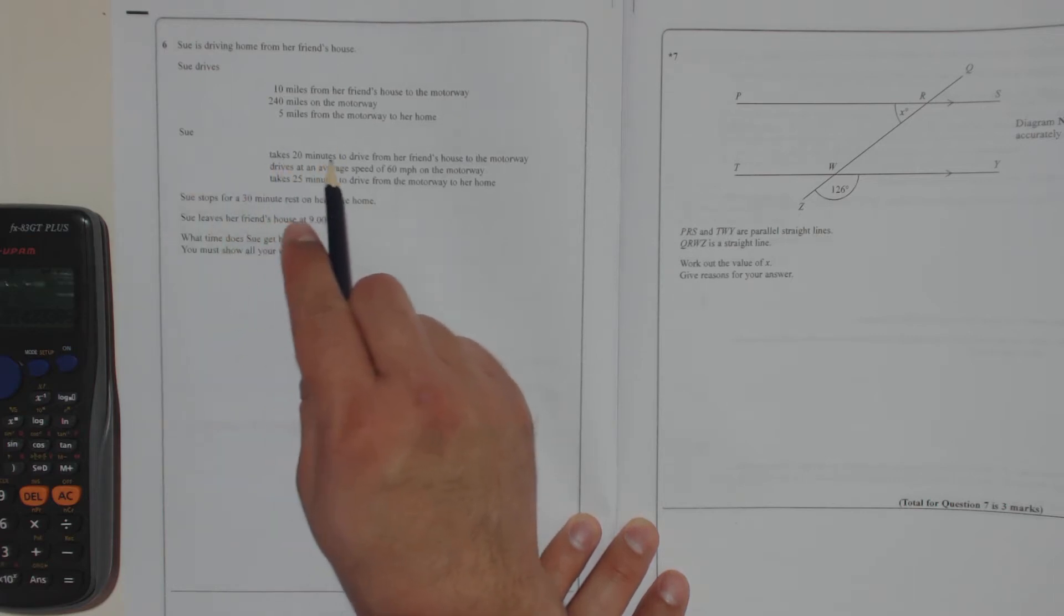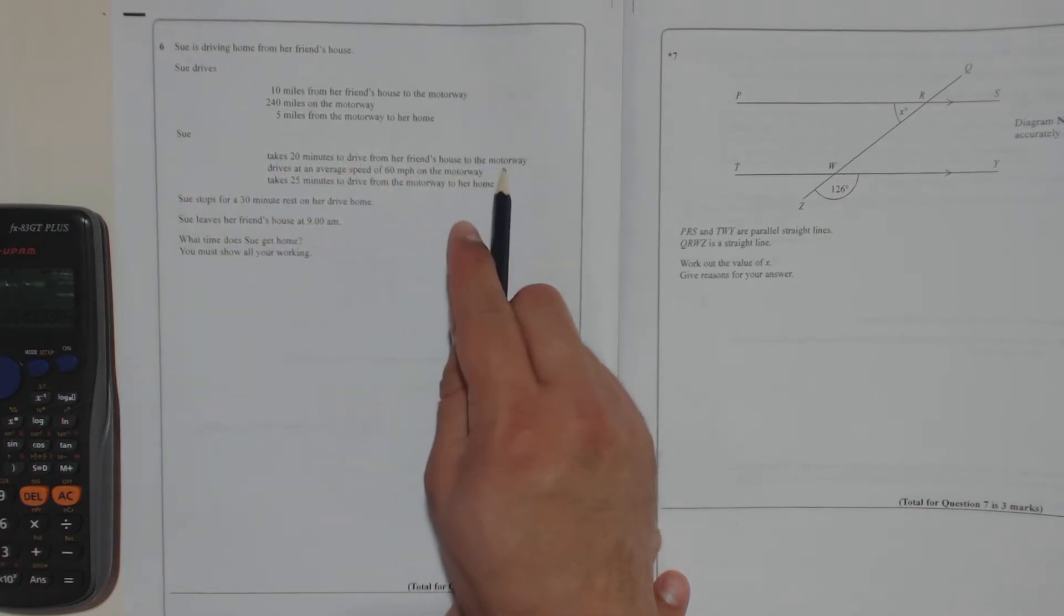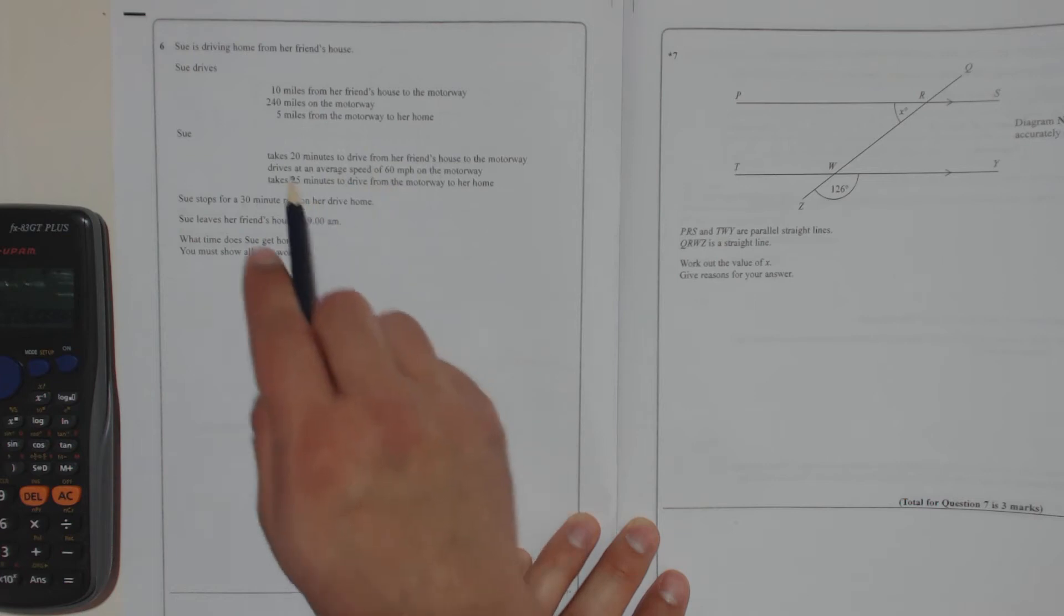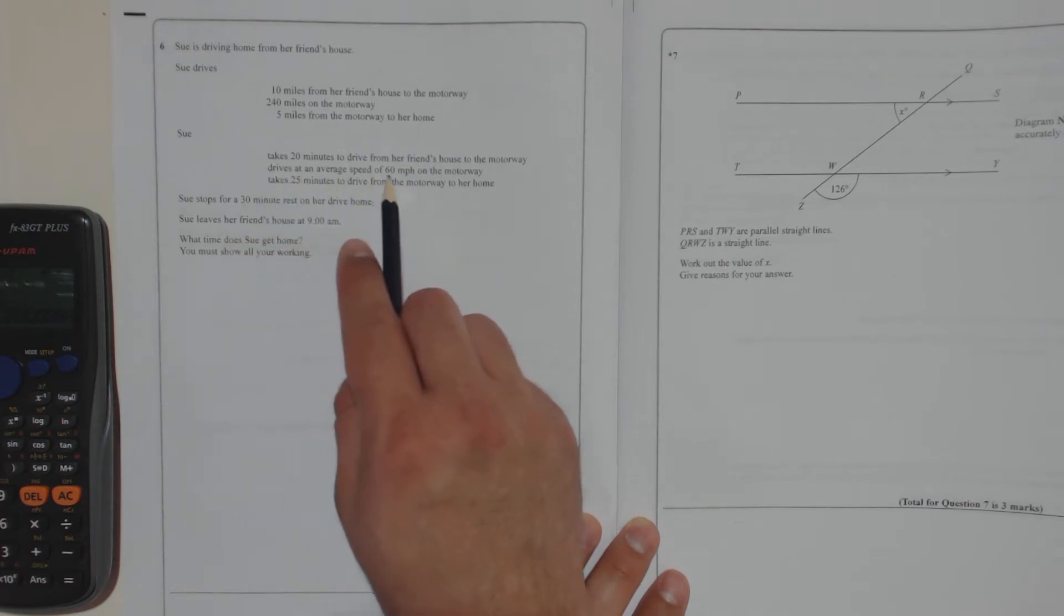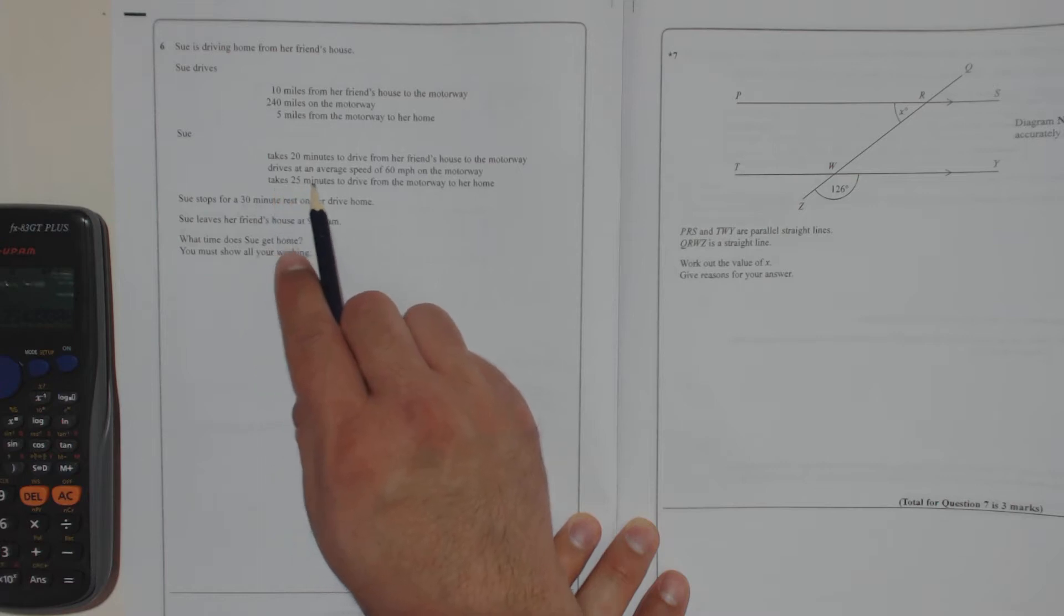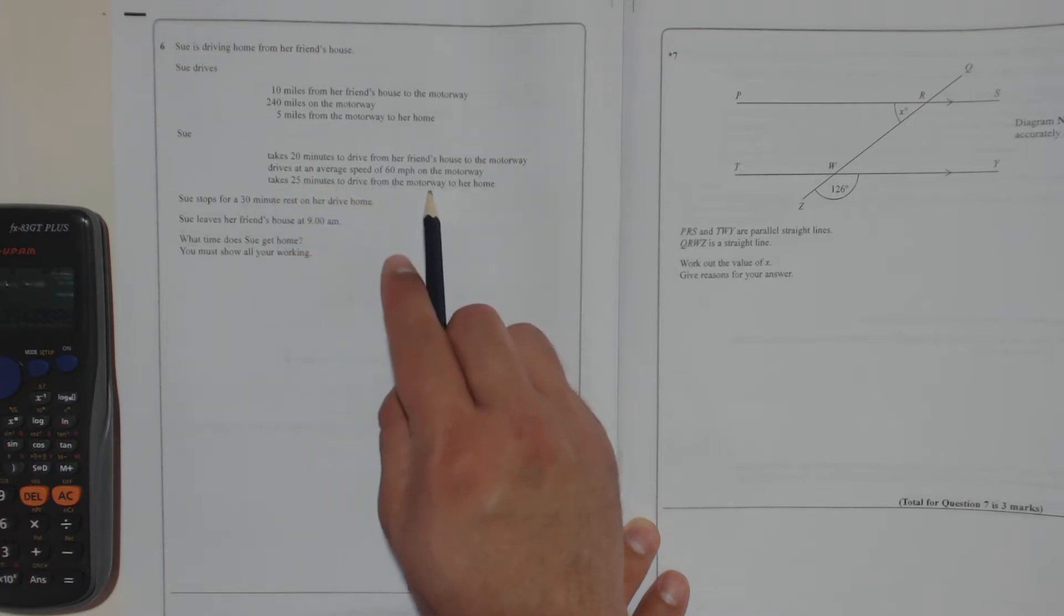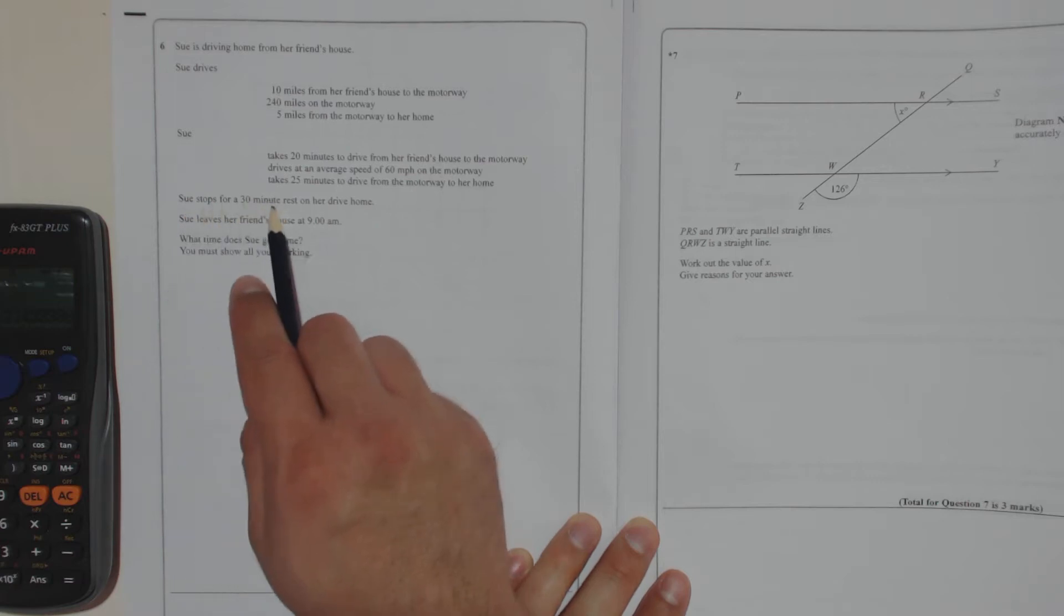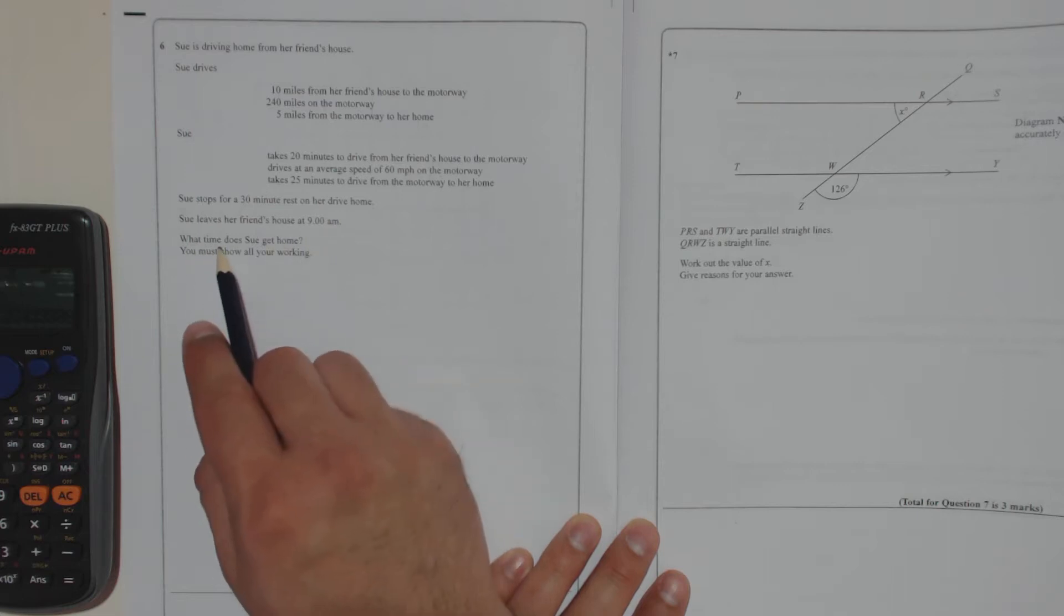Sue takes 20 minutes to drive from her friend's house to the motorway. She drives an average speed of 60 miles per hour on the motorway, and she takes 25 minutes to drive from the motorway to her home. Sue stops for a 30-minute rest on her drive home. She leaves her friend's house at 9am. What time does Sue get home? You must show all your working.